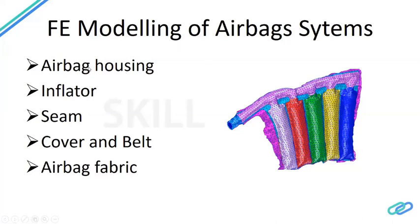The cover and belt also need to be modeled. For the passenger airbag, it is placed inside the housing, covered by a top-layer cover and a belt — a thin fabric. Modeling these components is important, and simulating the breaking of the cover and belt — the tearing simulation — is also critical to ensure the airbag deploys correctly. Separate simulations may be required to test how well this process works.